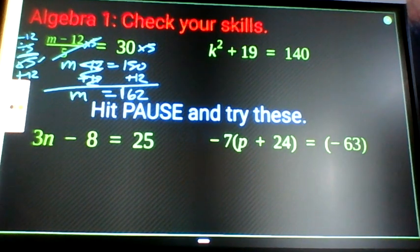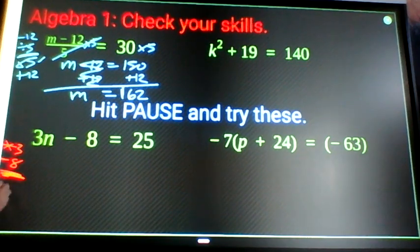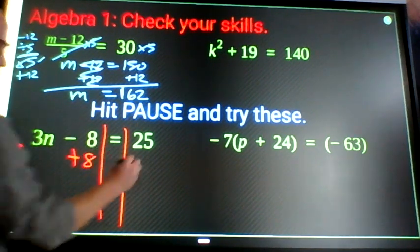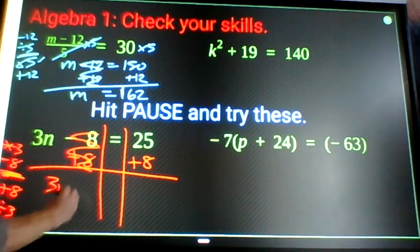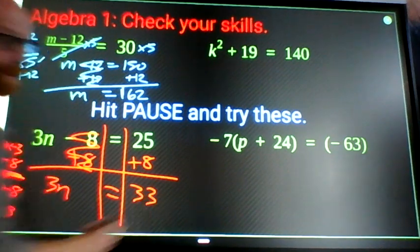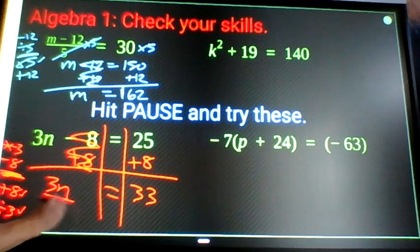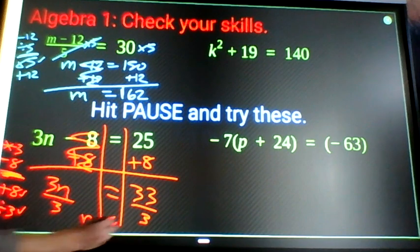This guy here: what's happening to n? Times 3 and then minus 8. What am I going to do? Add 8 and then divide by 3. Add 8: cancel, 3n equals 33. Divide by 3: n equals 11.